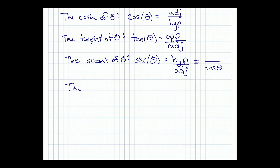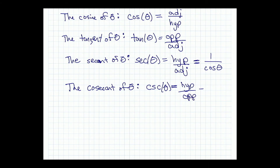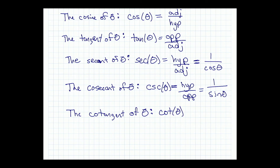The cosecant of theta — written csc(θ) — is the upside-down sine, so it's the hypotenuse over the opposite side, which equals one over the sine. And lastly, the cotangent of theta — written cot(θ) — is the upside-down tangent, so it's the adjacent over the opposite, which equals one over the tangent.